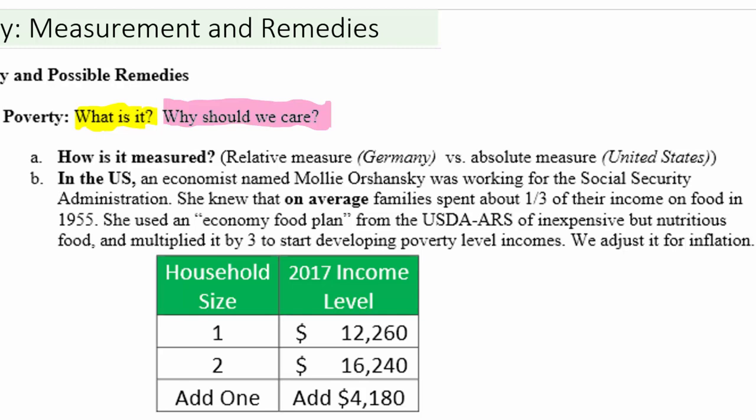In an economics class, we really need to understand how poverty is measured in the United States in addition to how it can be measured in other countries. There are two primary ways that poverty is defined and measured. One way is to define it as a relative measure, as Germany does. A relative measure means we're going to say that a household has an income that is below some measure compared to the average or median of all households.